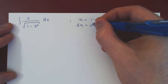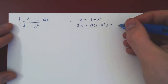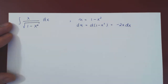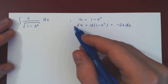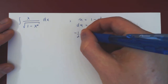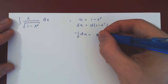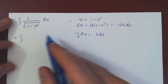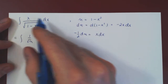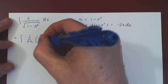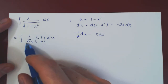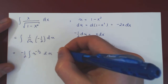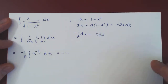The differential of u is du equal to the differential of 1 minus x squared, which is negative 2x dx. On the top you have x dx, so multiply by negative 1 over 2, and you get negative 1 half du is simply x dx. You'll have a very simple integral: 1 over root of u, and x dx is negative 1 half du. Pull the negative 1 half up front, rewrite 1 over root of u as u to the minus 1 half, use the power rule, go back in terms of x, and you're done.